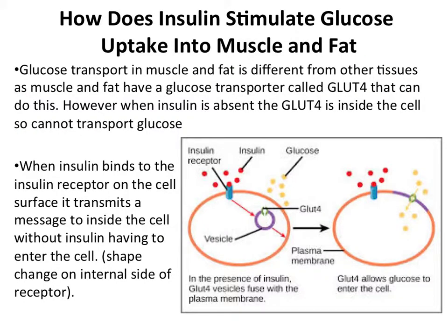The uptake of glucose is quite different into muscle cells and fat cells. Rather than having continuously expressed glucose transporter molecules on the plasma membrane, they have a different type of glucose transporter. This one is called GLUT4. You are going to become quite familiar with GLUT4 and will need to be able to talk about it.